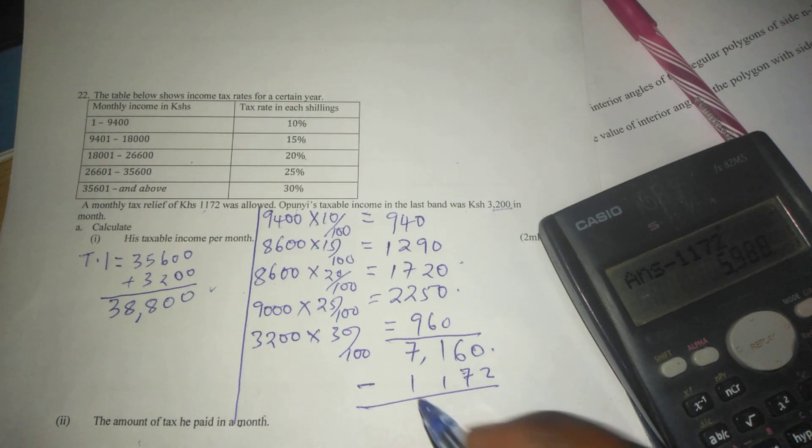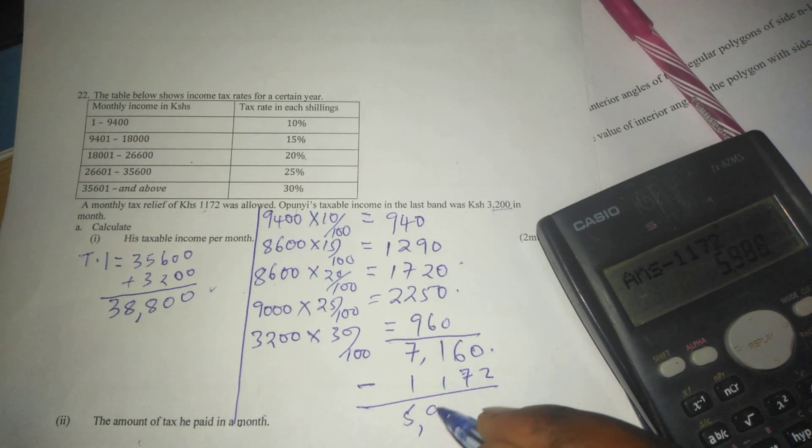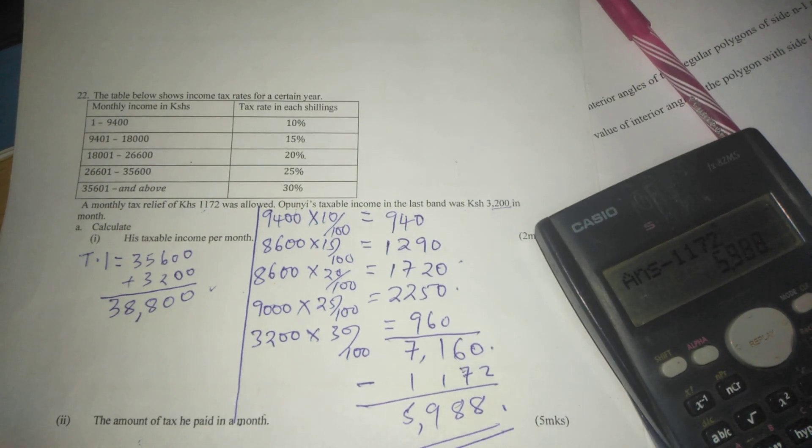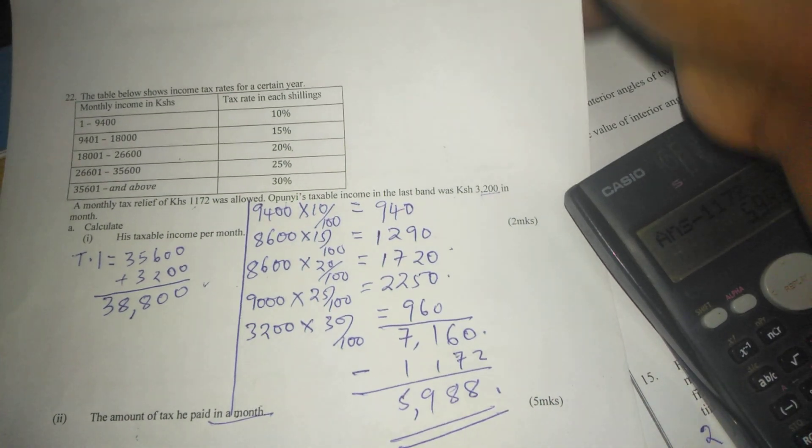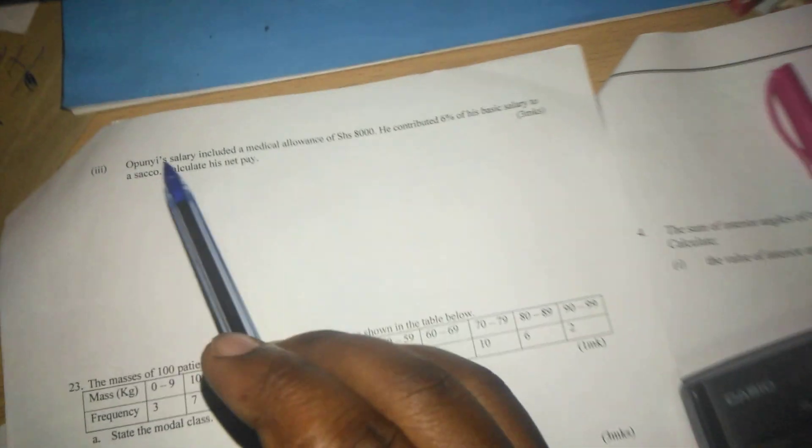When you subtract relief, then this gentleman pays 5,988 shillings. He pays this in every month. So that is what we call the tax he pays in a month.